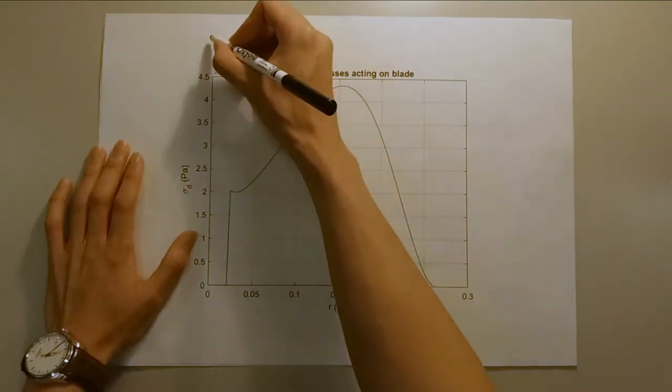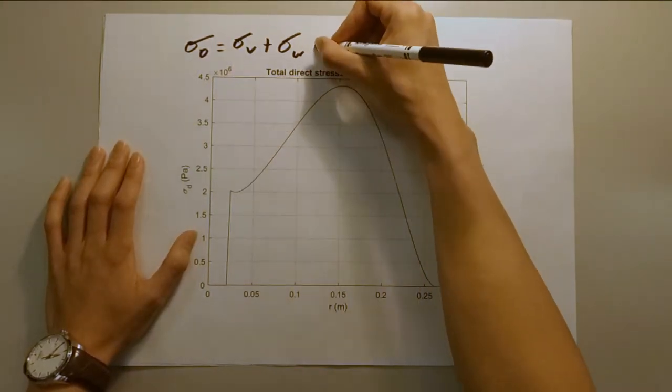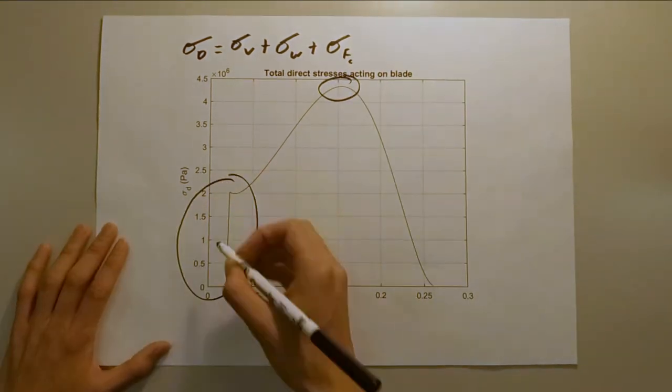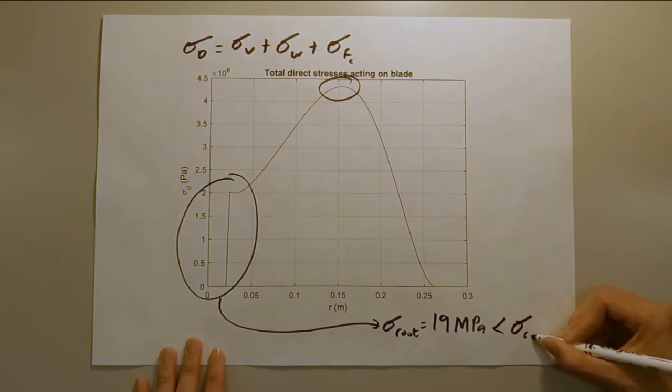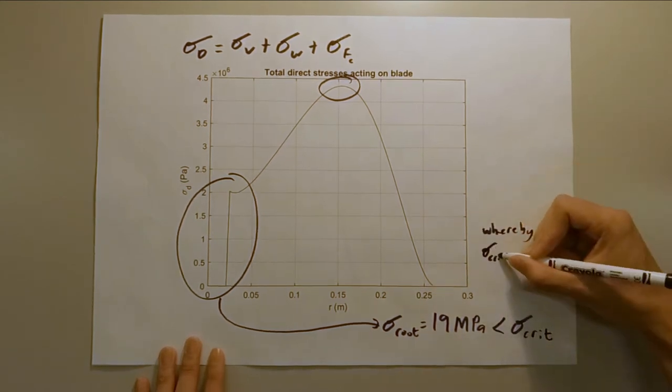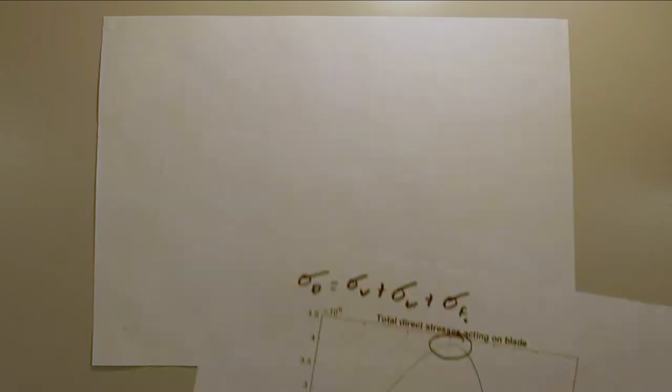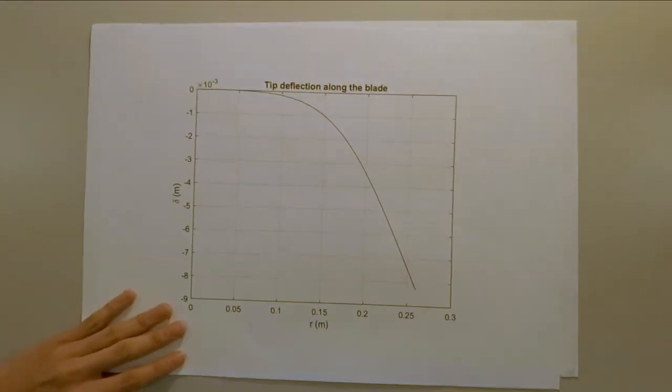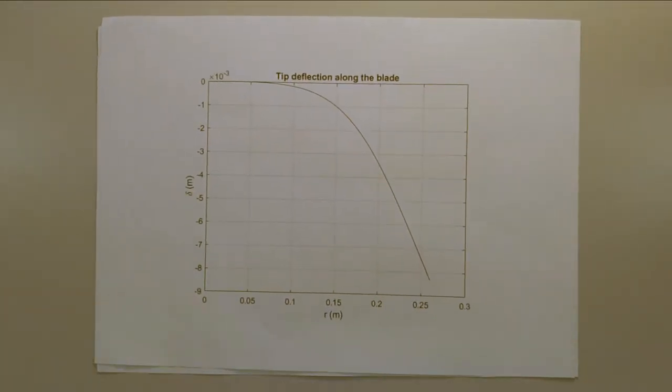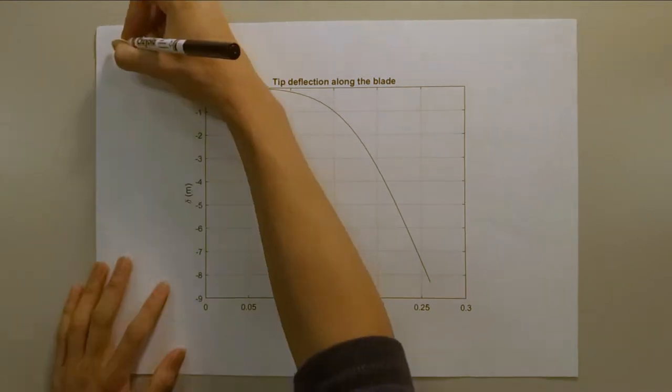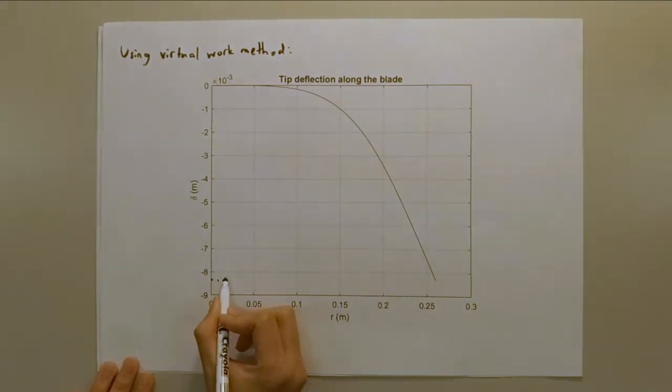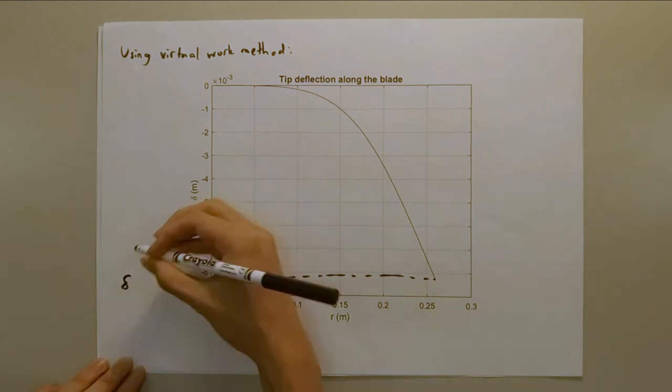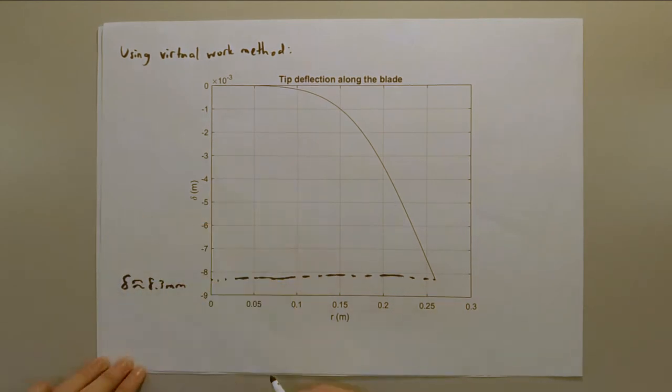The bending moments of the blade root had to be calculated separately as it had minimal aerodynamic effects on it. The stress occurring at the blade root was found to be 19 MPa, which was well within the critical stress of the ABS plastic material. Another consideration we had to ensure was that the tip deflection was well within the necessary constraints for it to operate at its optimal performance. The max deflection was calculated using virtual work method. We found that the max deflection was approximately 8 mm.